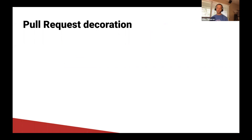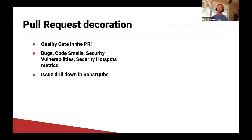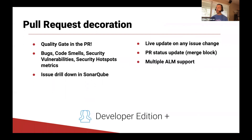You can see we're bringing a consistent, valuable feature set for all of the ALMs with every pull request. We're giving you a clear quality gate in the pull request, as well as detection of bugs, code smells, and vulnerabilities. You saw that we're able to drill down on an issue in SonarCube, and when we changed the status of an issue, that gave us a live update back into our pull request in GitHub. You also saw the ability to block a merge based on your quality gate profile — in this case, we blocked because we had an unreviewed security hotspot — and of course, multiple ALM support.